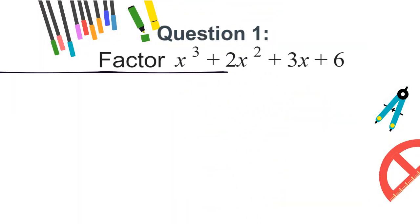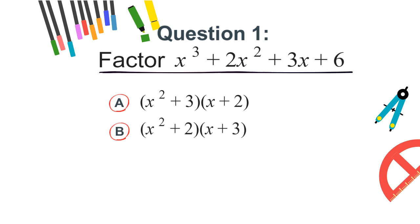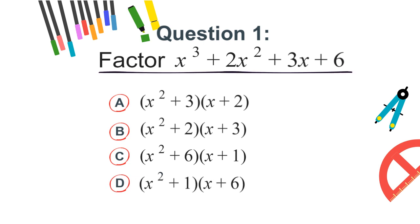Question 1. Factor x cubed plus 2x squared plus 3x plus 6. a. x squared plus 3 times x plus 2. b. x squared plus 2 times x plus 3. c. x squared plus 6 times x plus 1. or d. x squared plus 1 times x plus 6.